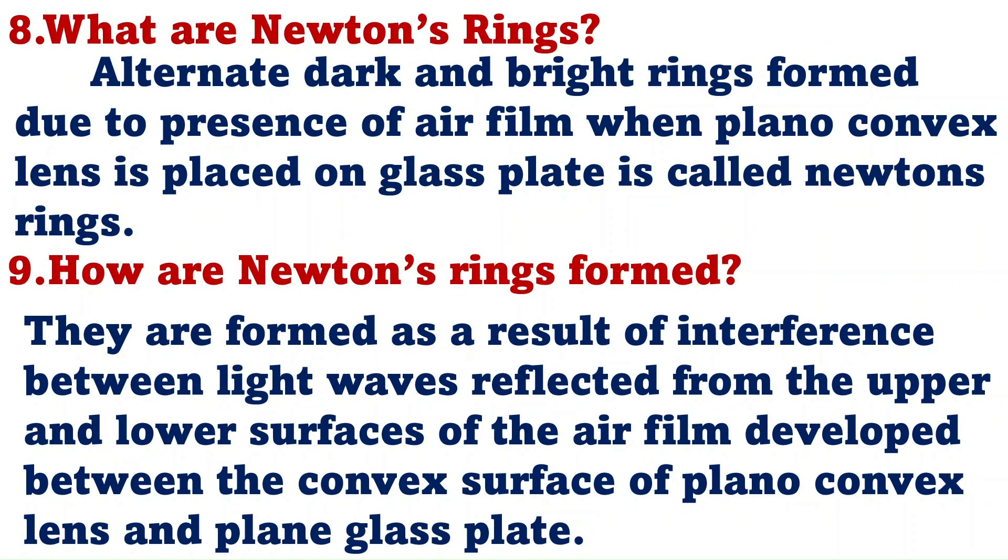What are Newton's rings? Alternate dark and bright rings formed due to the presence of air film when plano-convex lens is placed on the glass plate is called Newton rings. How are Newton rings formed? They are formed as a result of interference between light waves which are reflected from the upper and the lower surface of the air film developed between the convex surface of the lens and plane glass plate.